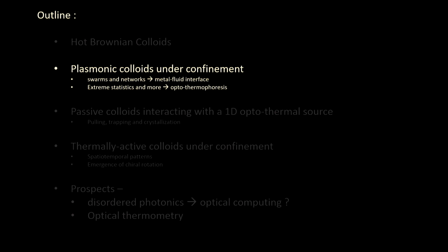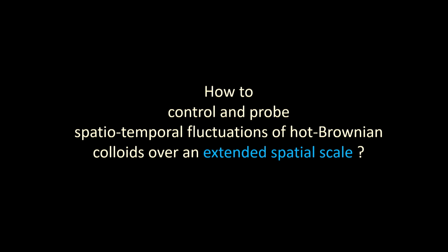The main sub-question here is how to control and probe spatiotemporal fluctuations of hot Brownian colloids over an extended spatial scale. The idea is to start with a metal-fluid interface, illuminate it with light to excite surface plasmons, and observe what the colloids do.